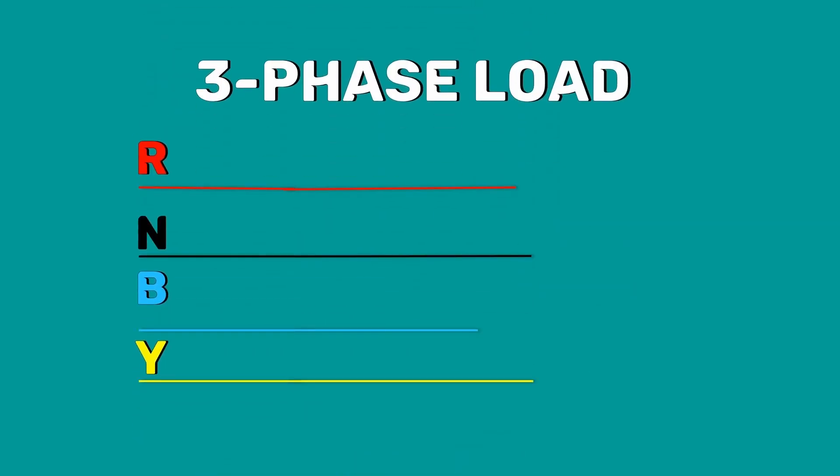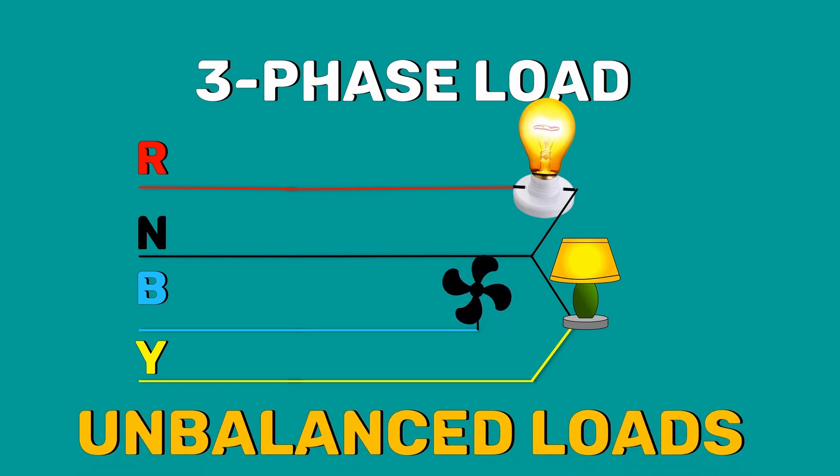Let's assume that single phase loads of two lamps and a fan are connected between the neutral and the R, Y, B phases respectively. It is impossible for these loads to have the same impedance and power factor. This means it's an unbalanced load.